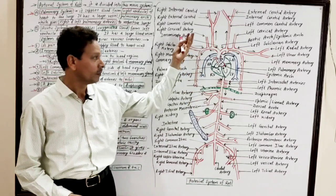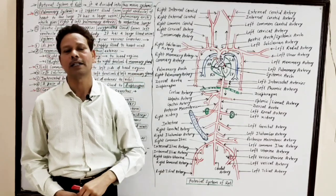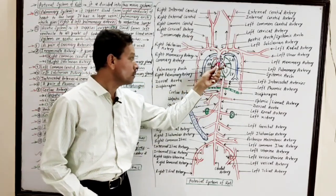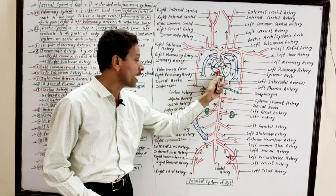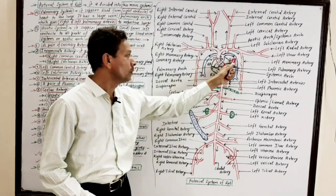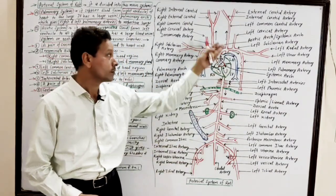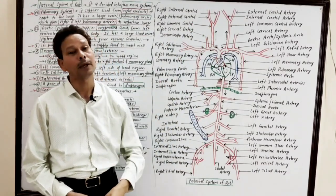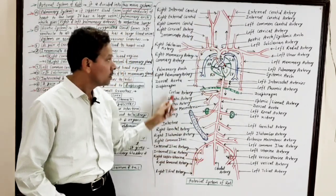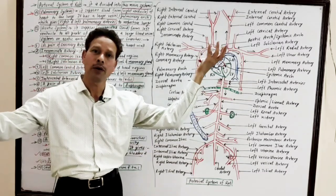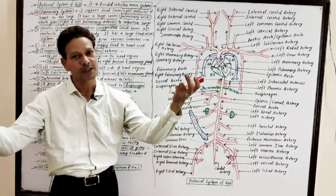This is all about the arterial system of rat. Dear students, this entire system is divided into two parts: the pulmonary system, in which the pulmonary arc carries deoxygenated blood from the right ventricle to the lungs through a pair of pulmonary arteries; and the aortic or systemic body system, in which oxygenated blood from the left ventricle is supplied to all body organs. In the next lecture, I will discuss the venous system. Thank you.